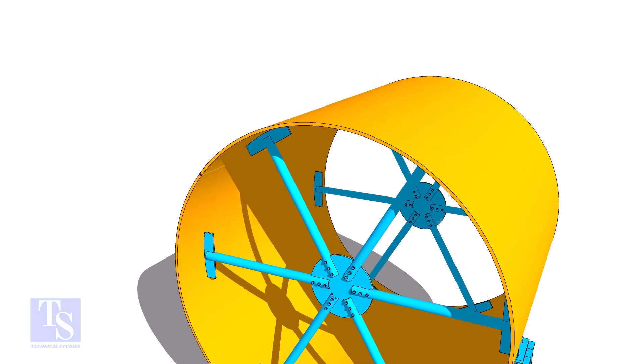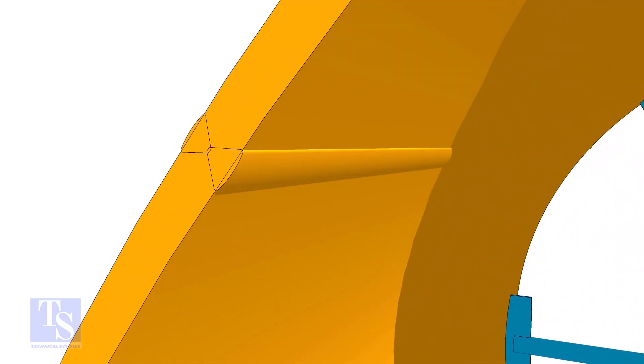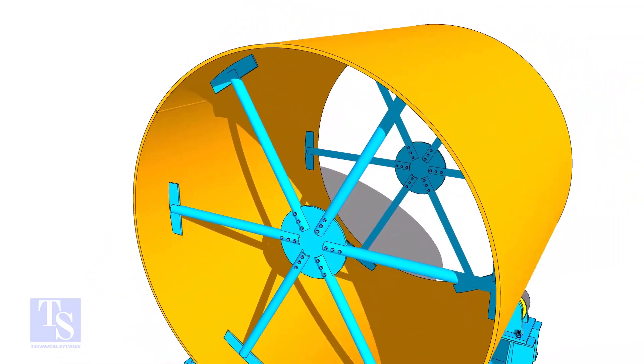After the shell plate rolling, install the spider support and complete the long seam welding. The spider support will help to maintain the circularity of the shell.